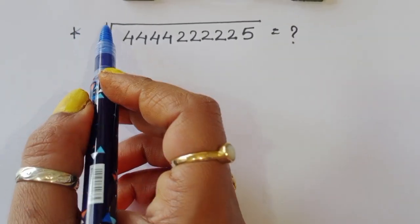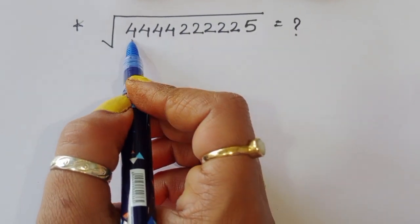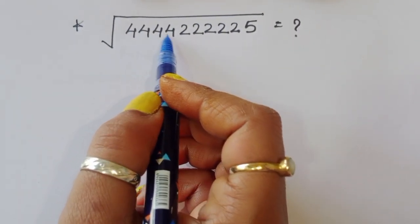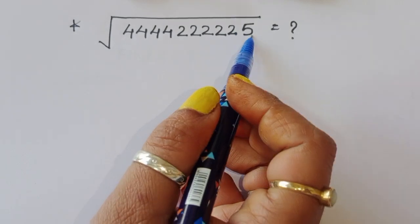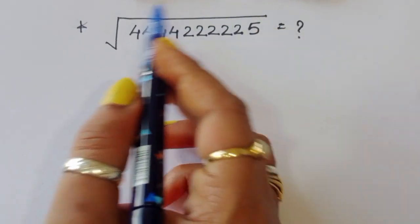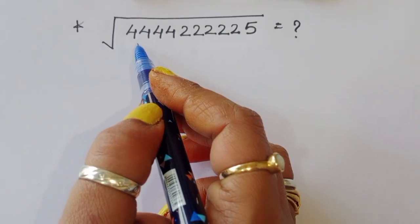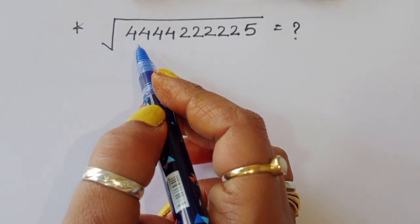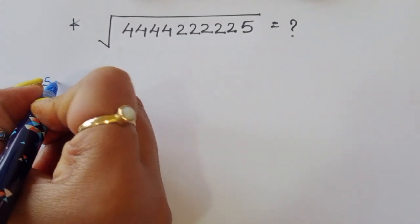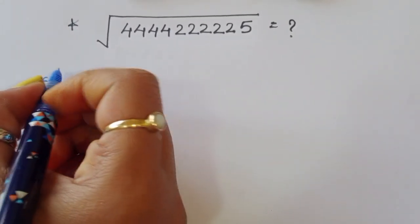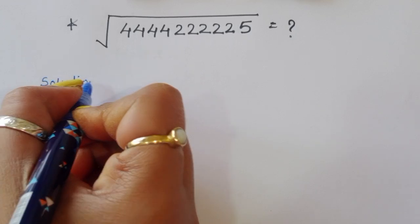The question gives us the square root of 44444 times 22222 times 5, and we have to find the value of this term. This is a large number, so let's look at the solution.